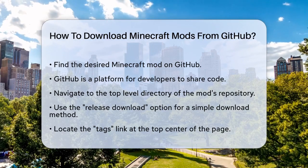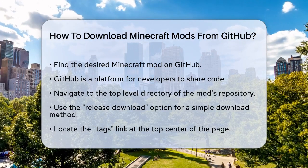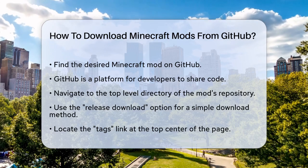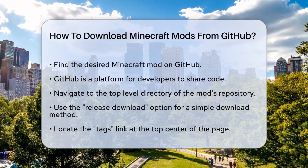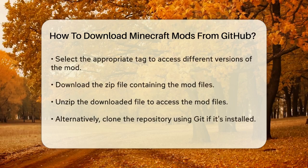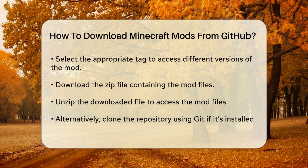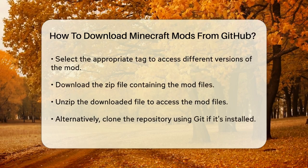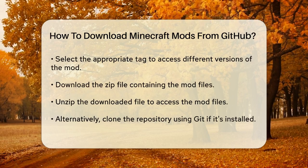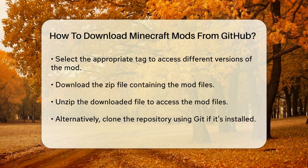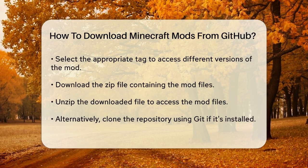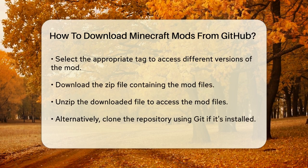Once you've found the repository, navigate to the top-level directory of the project. Now, you have a few ways to download the mod, but one of the simplest methods is using the Release Download option. Look for the Tags link near the top center of the page. This will show you a list of all the tags and releases for the project. Tags are like snapshots of the project at different versions, so you can choose the one you need.